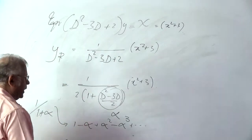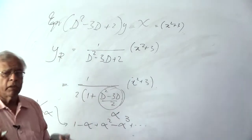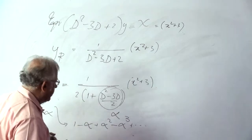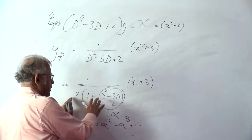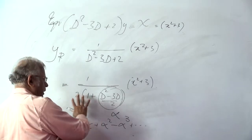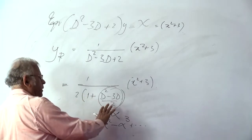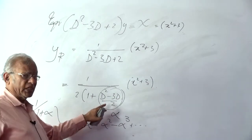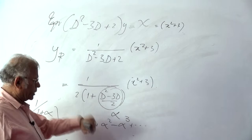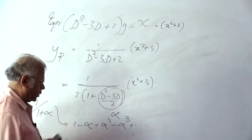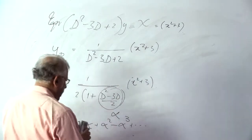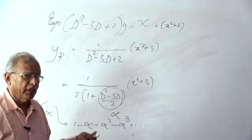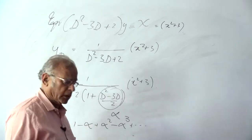These series converge when the modulus of alpha is less than 1, but that condition is not critical here. We assume the binomial theorem can be applied to expressions where alpha is in terms of D, and if we get a tenable result, our assumption is validated.